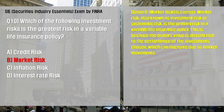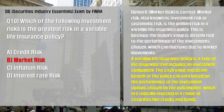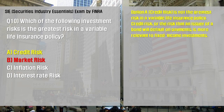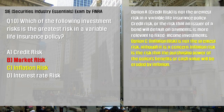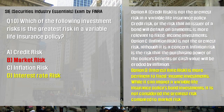A variable life insurance policy includes an investment component — the cash value and death benefit can vary based on the performance of the investment options chosen by the policyholder, which are typically invested in securities like stocks and bonds. Option A, Credit Risk, is not the greatest risk; credit risk — the risk that an issuer of a bond will default on payments — is more relevant to fixed income investments. Option C, Inflation Risk, is not the greatest risk, though it is a concern. Option D, Interest Rate Risk, is more pertinent to fixed income investments and, while it can impact the variable life insurance policy's bond investments, it is not considered the greatest risk compared to market risk.